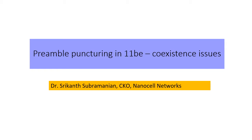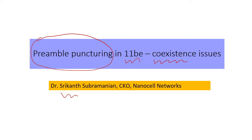Hi, in this short video I wanted to touch upon preamble puncturing in 802.11be or Wi-Fi 7, and specifically on some of the questions related to coexistence. My name is Srikanth and I am with NanoCell Networks.